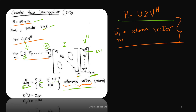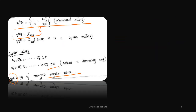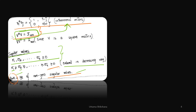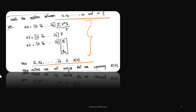If this orthonormality property is satisfied, then U-hermitian · U equals identity. Similarly, V-hermitian · V equals identity, also satisfying the property of orthonormal vectors. In terms of singular values, sigma-1 should be greater than sigma-2, and they should be ordered in decreasing fashion. The number of non-zero singular values represents the rank of the matrix.